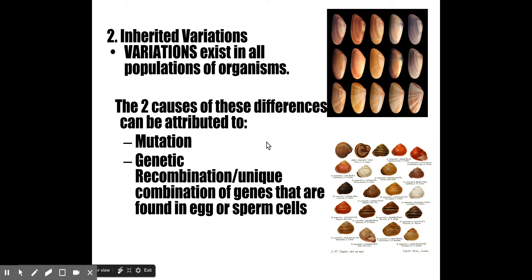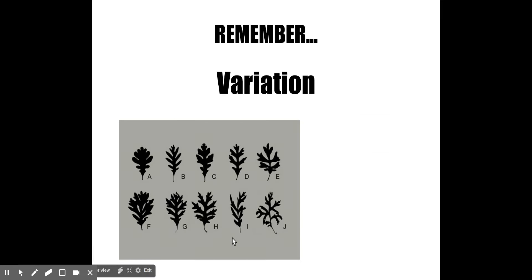Another way to get variation into populations that reproduce sexually is simply the idea of different combinations of alleles present in egg and sperm coming together at fertilization. So we have to remember this concept of variation.